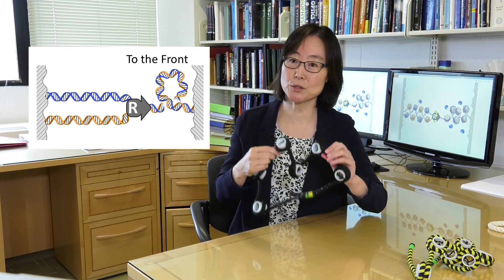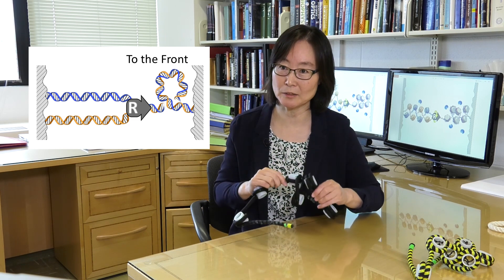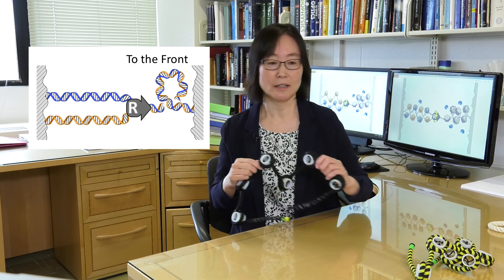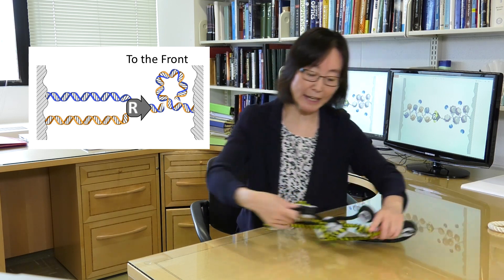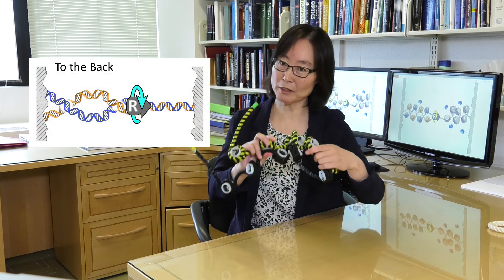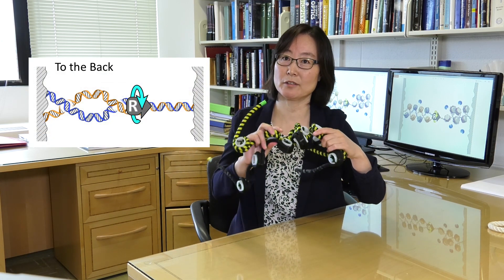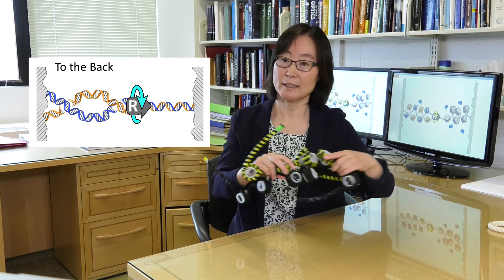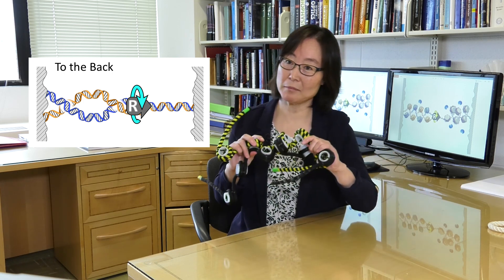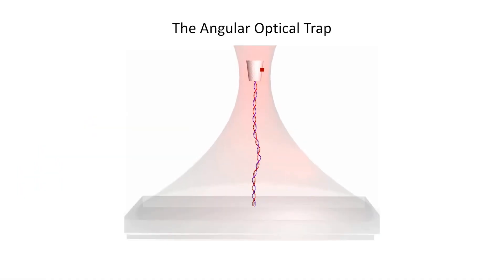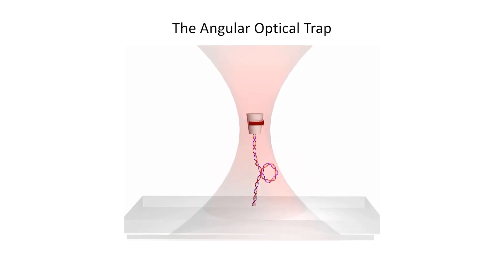In this case, the two daughter DNA molecules would be completely intertwined. This would create a major issue for chromosome segregation during cell division, and it could cause DNA damage and cell death. But how do you find out how hard it is to twist a molecule?